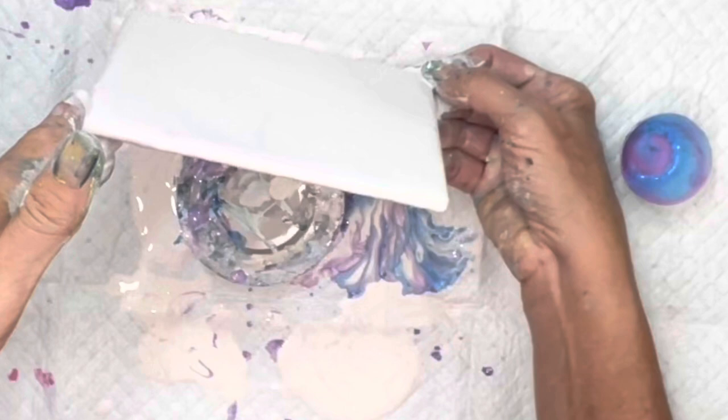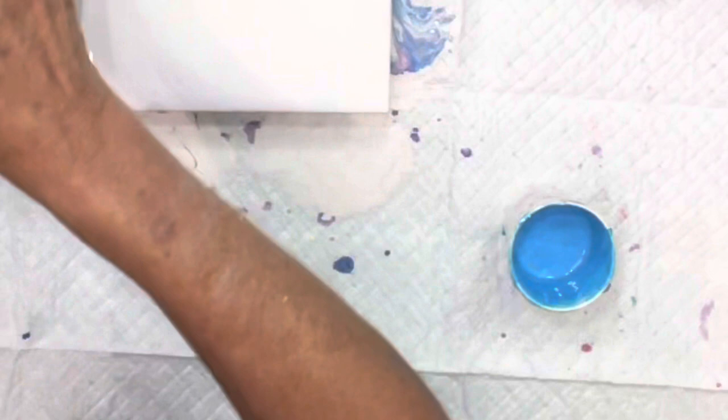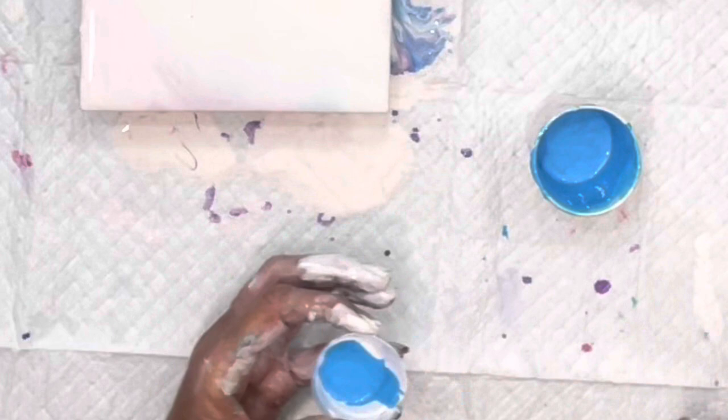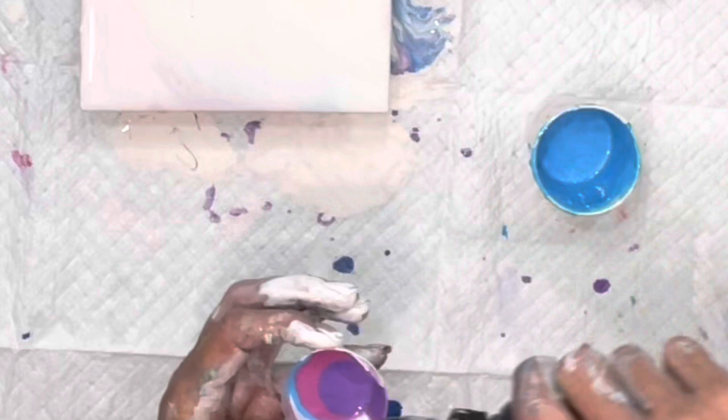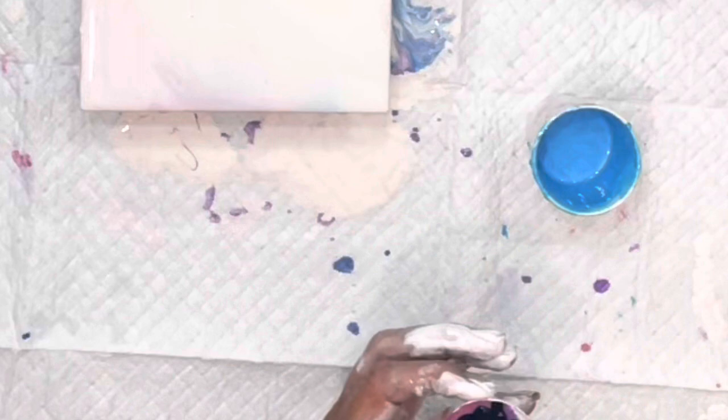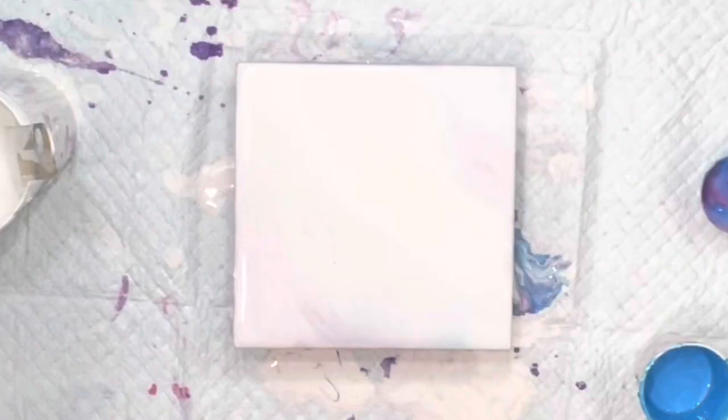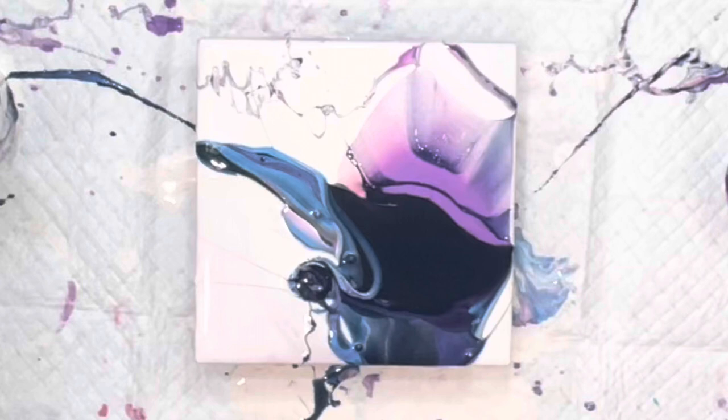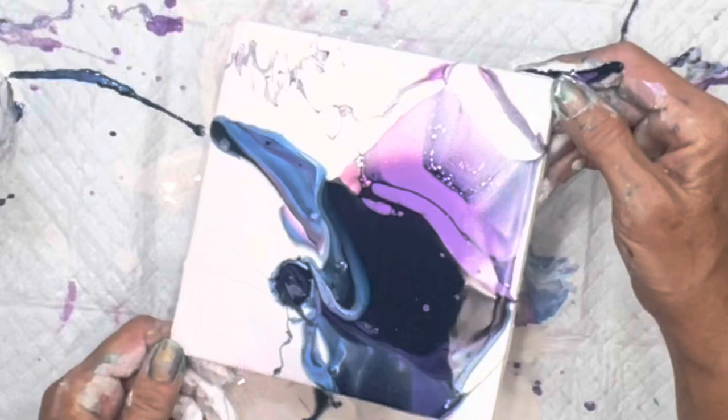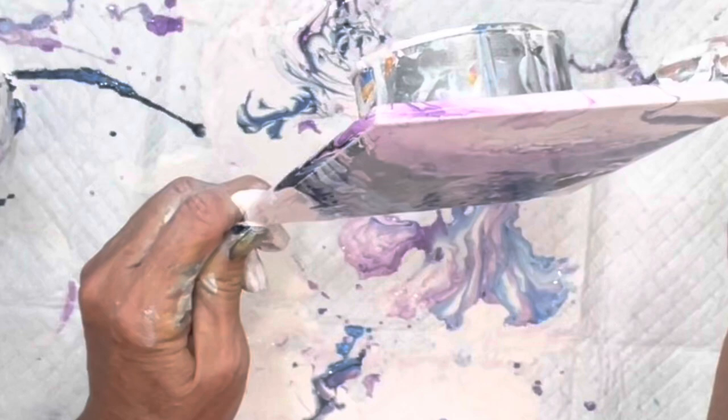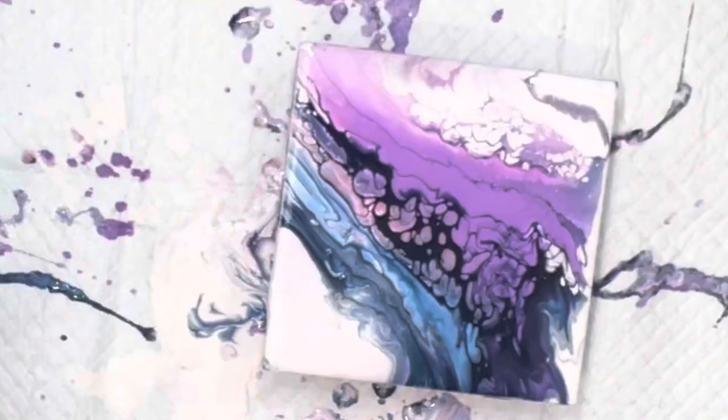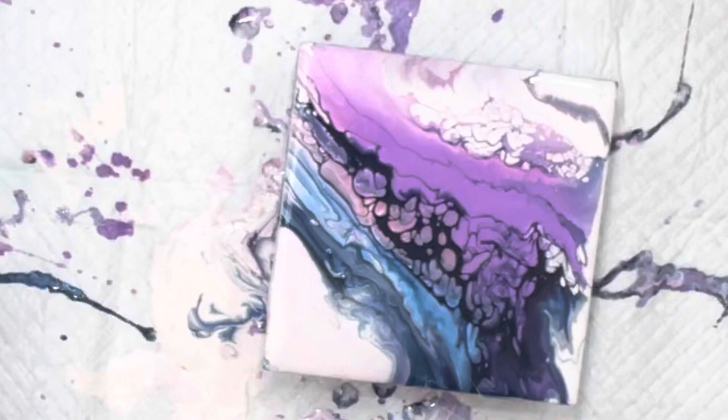So you can see the colors coming up. Okay, there we go. Now we're cooking. And then we're going to top it off with some cell activator. I should have put this on the bottom as well. Oh wow, holy Toledo. That's really cool. And that could develop yet too.